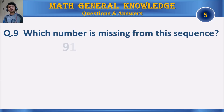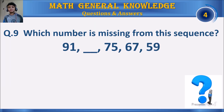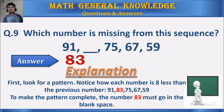Question 9: Which number is missing from this sequence? Your time starts. The answer is 83. First, look for a pattern — notice how each number is 8 less than the previous number. To make the pattern complete, the number 83 must go in the blank space.